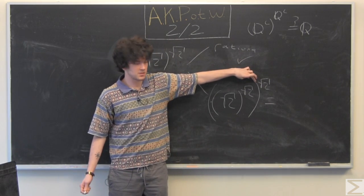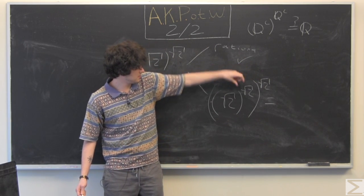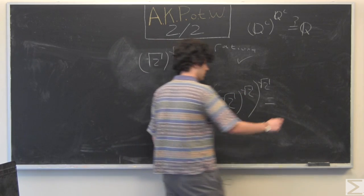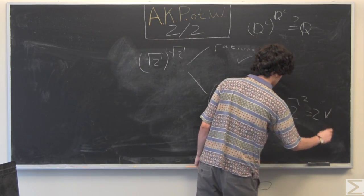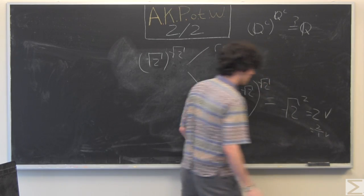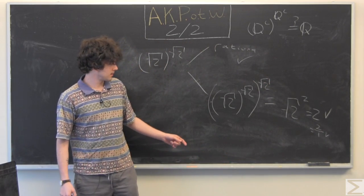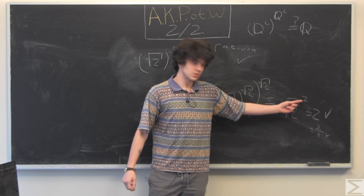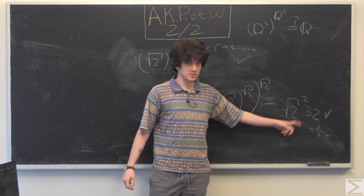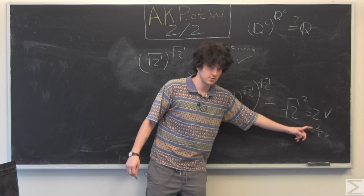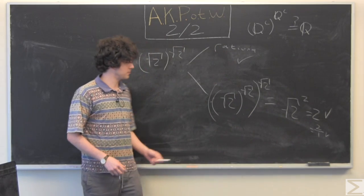This square root of 2 is going to come in, hit the square root of 2, turn it into 2. It's going to become square root of 2 squared, which is 2, which, of course, is rational, because it can be written as 2 over 1.